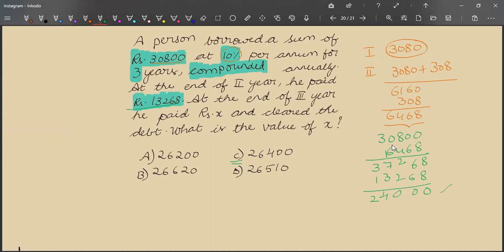How much is the rate of interest? 10%. 10% of 24,000 is 2,400. So he finally needs to pay 26,400 rupees at the end of third year in order to clear the debt.